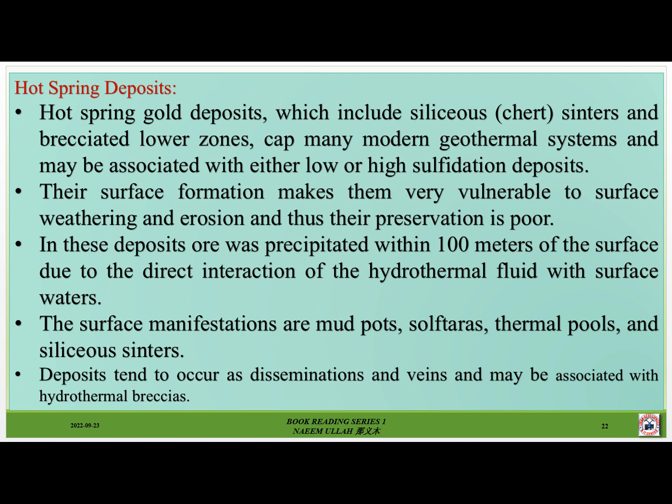Hot spring deposits. Hot spring gold deposits, which include siliceous chert sinters and silicified lower zones, cap many modern geothermal systems and may be associated with either low or high sulfidation deposits. Their surface formation makes them very vulnerable to surface weathering and erosion, and thus their preservation is poor. In these deposits, ore was precipitated within 100 meters of the surface due to the direct interaction of the hydrothermal fluid with surface waters. The surface manifestations are mud pots, solfataras, thermal pools and siliceous sinters. Deposits tend to occur as disseminations and veins and may be associated with hydrothermal breccias.